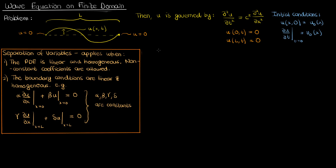So now that we've gone over the requirements behind using separation of variables, let's go over how separation of variables actually works, particularly in the context of this one-dimensional wave equation problem. Notice that in this PDE problem both the PDE and the boundary conditions are linear and homogeneous, which means that it is indeed possible to use separation of variables. In separation of variables we assume that our function u can be separated into a product of two functions, one exclusively a function of x and the other exclusively a function of t.